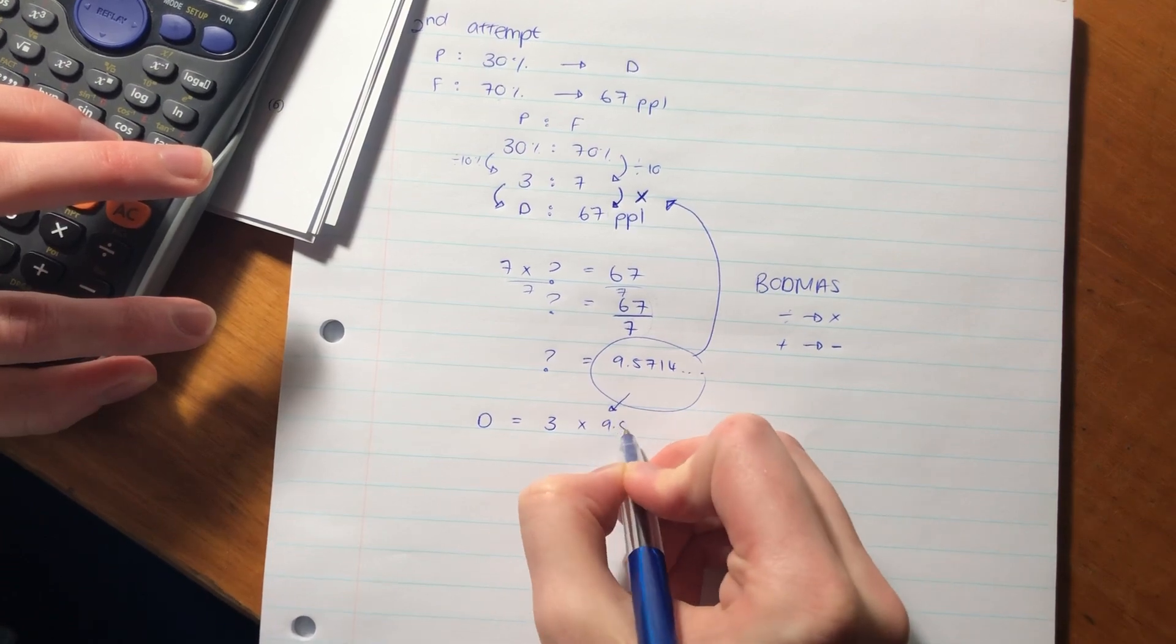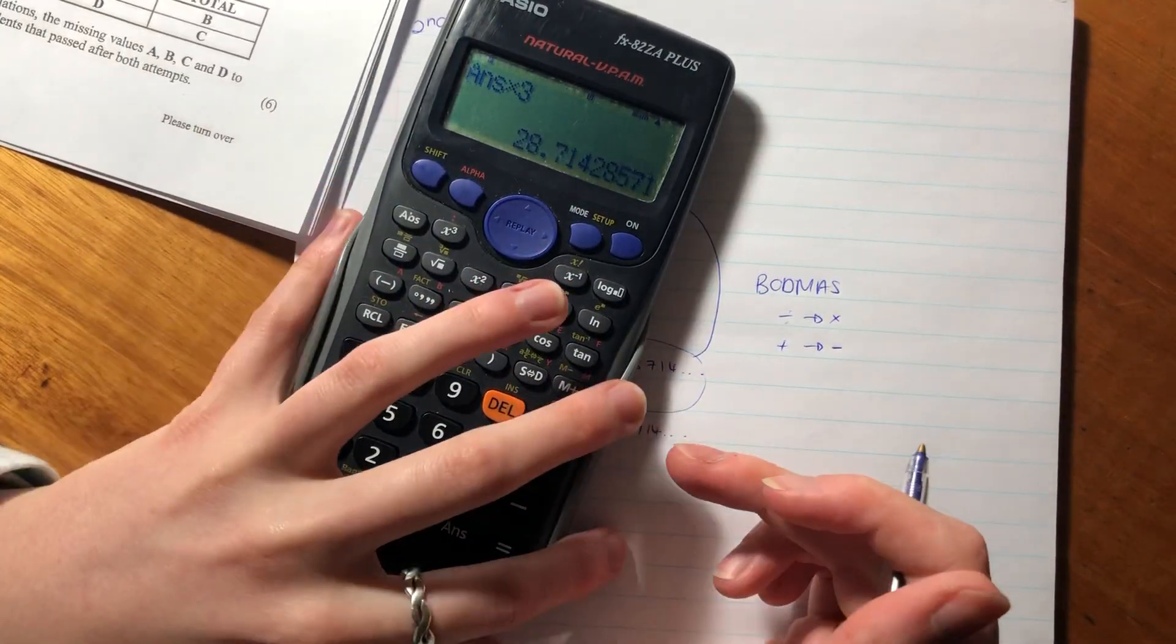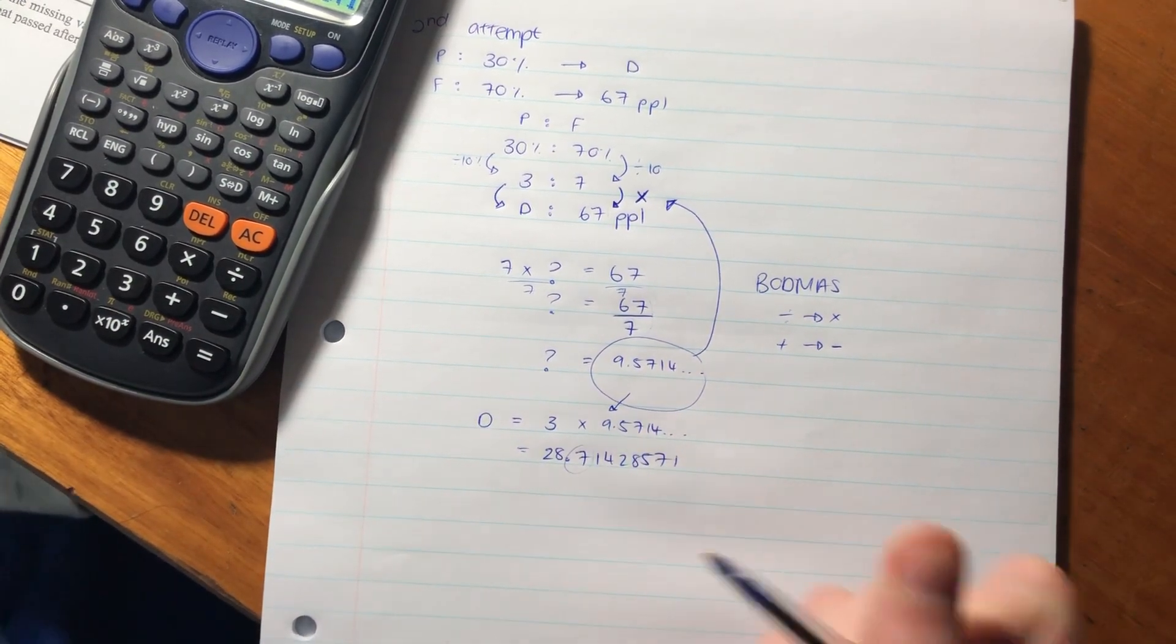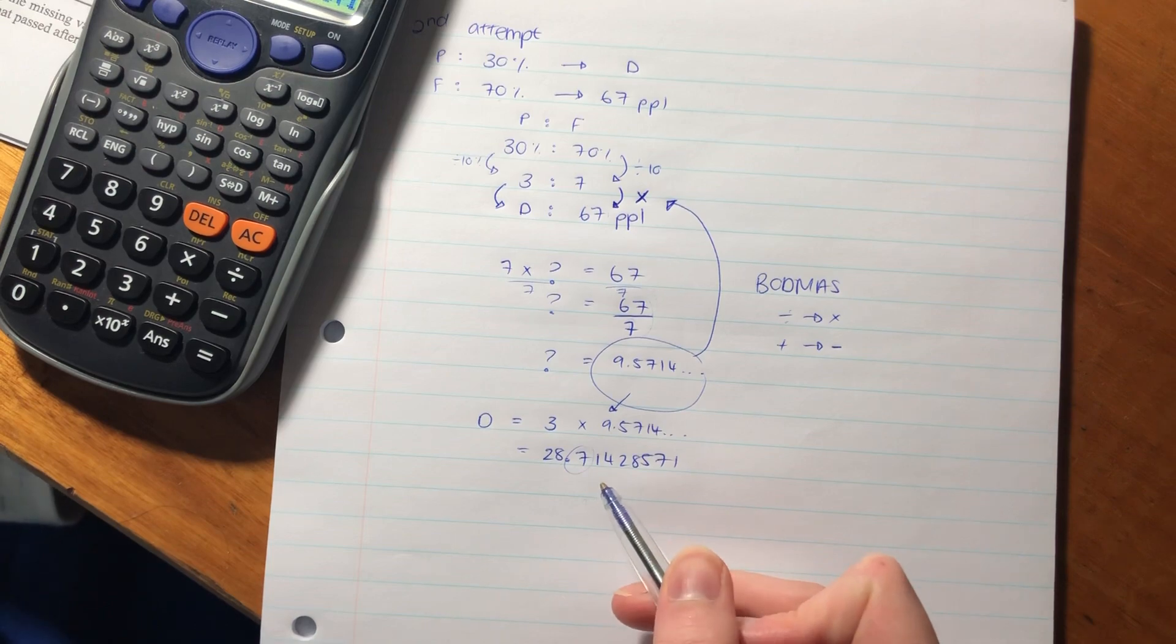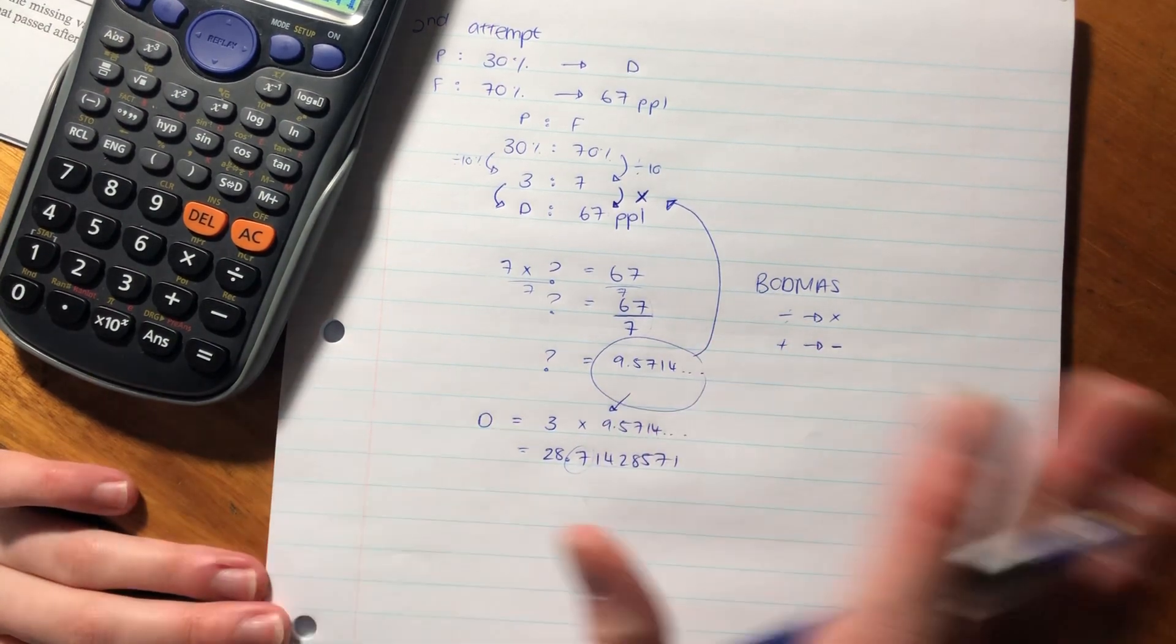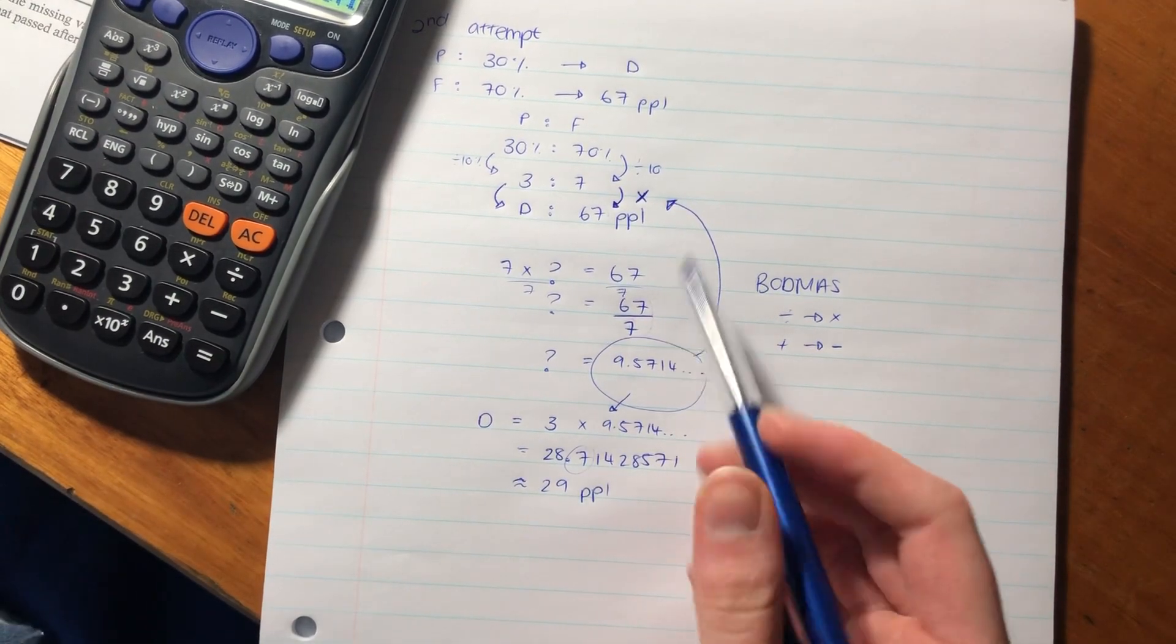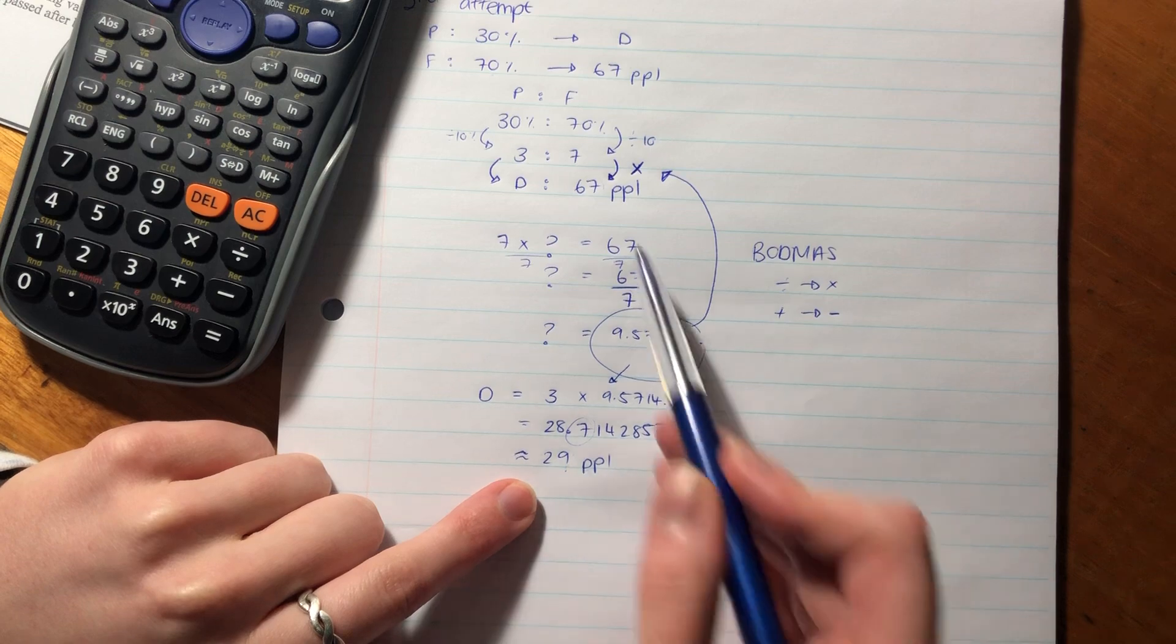D is going to equal 3 times 9.5714. Let's put that into our calculator: 3 times that gives 28.71428571. We cannot have weird decimals when it comes to people - you don't get 0.71428571 of a person. A person is either a whole person or they don't exist. If we round this off, it is 29 people. So D is 29.